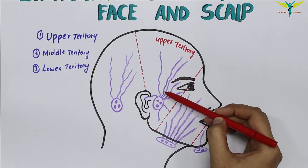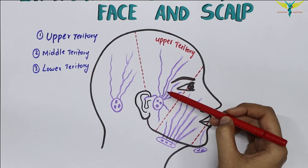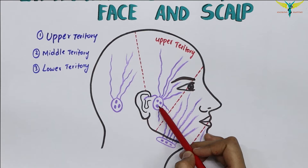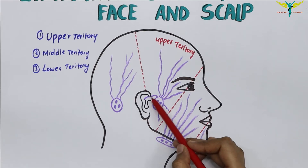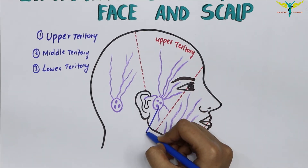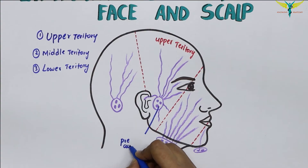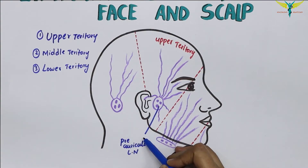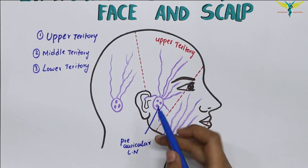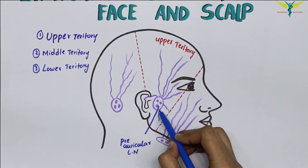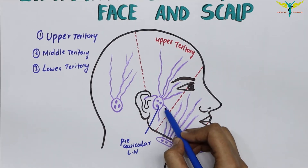The lymph from this upper territory is drained into the preauricular lymph nodes. As these lie in front of the auricle, they are called the preauricular lymph nodes. These preauricular lymph nodes are also called the superficial parotid lymph nodes, because they lie superficially to the parotid gland.